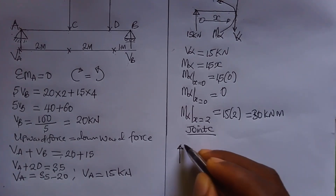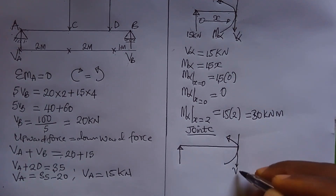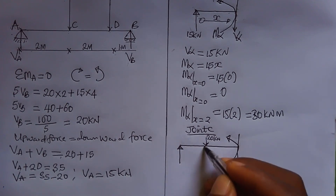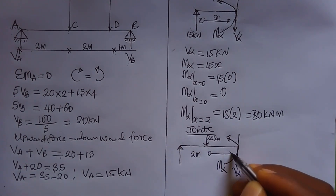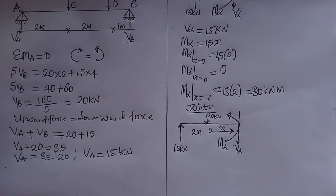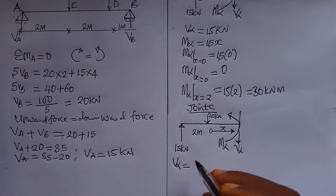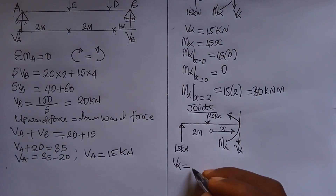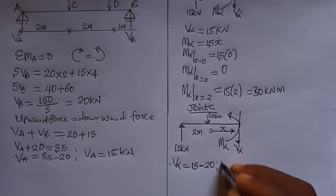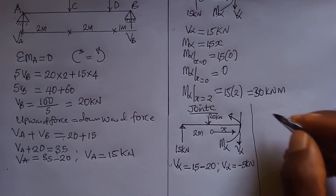Now we go to the next joint, which is joint D. There is a point load of 20 kN at point C, and the distance from A to C is 2 meters; the distance from C to the cut is unknown, so we call it x. V_alpha equals: 15 kN going up, minus 20 kN going down, so V_alpha equals minus 5 kilonewtons.